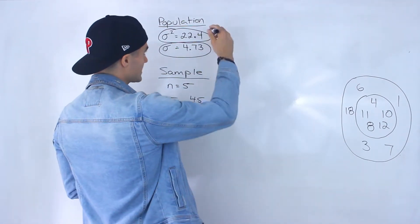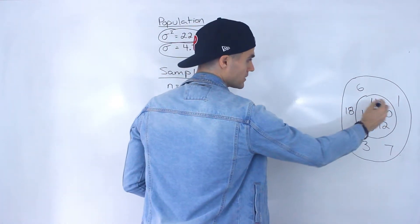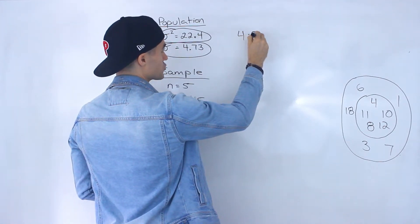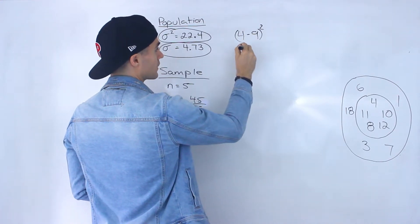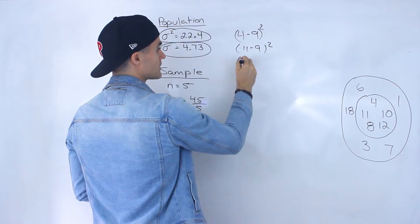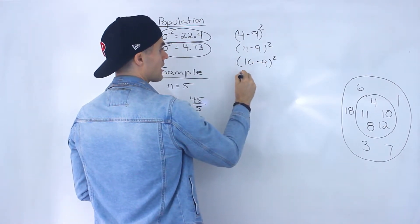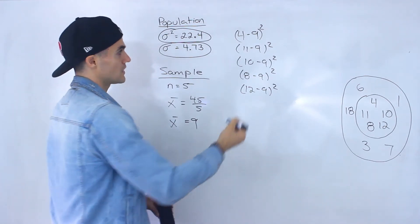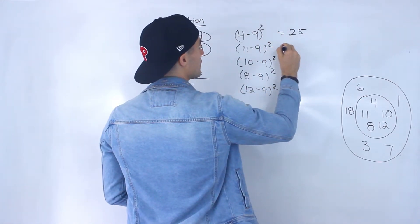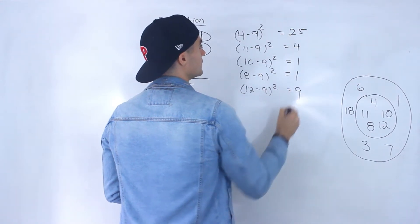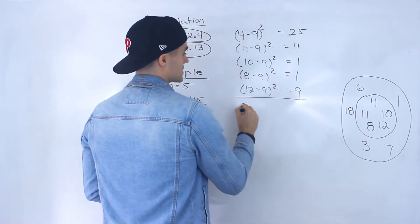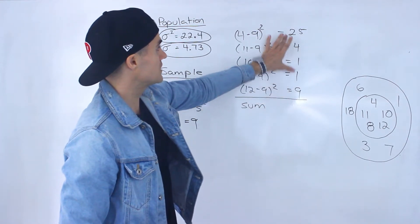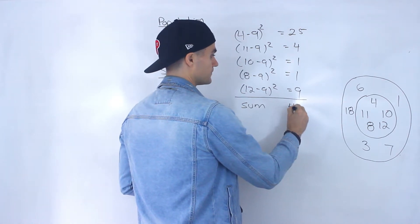Now, exactly as we did before, we take all the data points and see how much they deviate from the mean. So: (4 − 9) squared, (11 − 9) squared, (10 − 9) squared, (8 − 9) squared, and (12 − 9) squared. That gives us squared deviations of 25, 4, 1, 1, and 9. Summing those: 15 plus 25 equals 40.